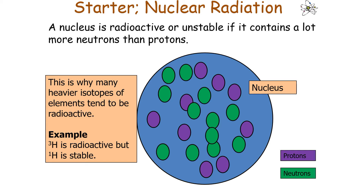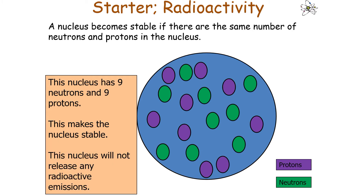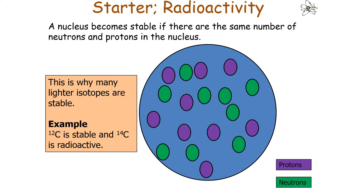For example, the hydrogen isotope with atomic mass 3 — so 2 neutrons and 1 proton — is radioactive. But when it's H-1, with only 1 proton and no neutrons, it is stable. In this particular example, the nucleus has 9 neutrons and 9 protons. Because the number of protons equals the number of neutrons, this nucleus is going to be stable — it will not release any radioactive emissions. It is not radioactive, which is why many lighter isotopes are stable. Carbon-12 is stable, yet carbon-14, with its extra neutrons, is radioactive.